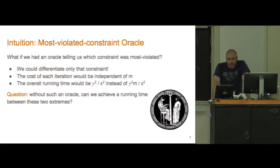This does raise the question: if we have a runtime of gamma squared m over epsilon squared if we check every constraint, and we have a runtime of gamma squared over epsilon squared when we don't need to check every constraint, can we get somewhere in between these two extremes?